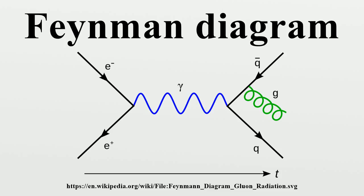A Feynman diagram is a representation of quantum field theory processes in terms of particle paths. The particle trajectories are represented by the lines of the diagram, which can be squiggly or straight, with an arrow or without, depending on the type of particle. A point where lines connect to other lines is an interaction vertex, and this is where the particles meet and interact, by emitting or absorbing new particles, deflecting one another, or changing type.